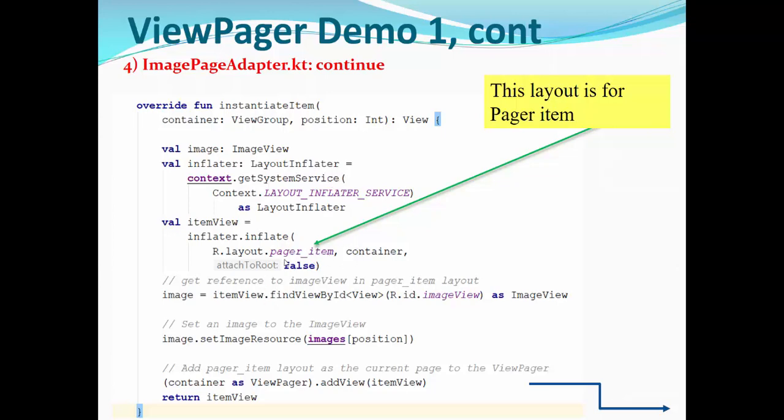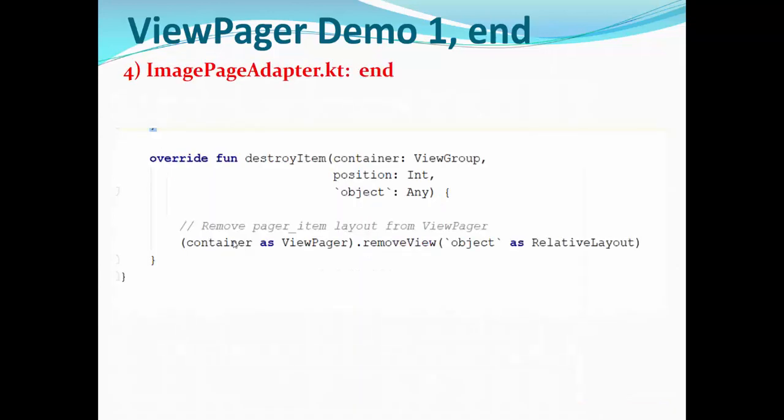Then this layout is connected as a PageItem using Inflator. Then you get a reference to the ImageView in PagerItemLayout, set an image to the ImageView. And finally, add PagerItemLayout as a current page to the ViewPager. Please note the return ItemView. This is actually the view that Inflator returned in this method. And finally, we have DestroyItem method implemented.